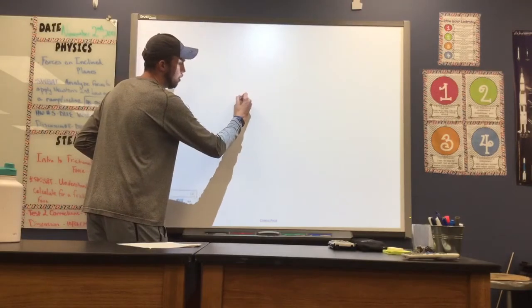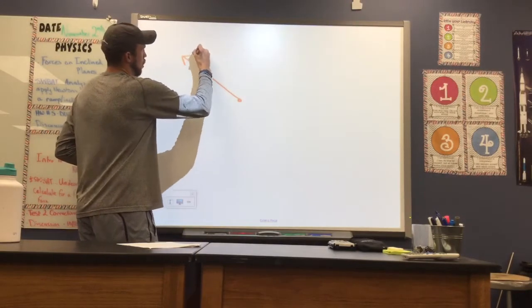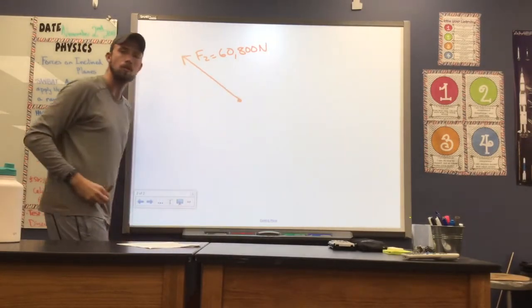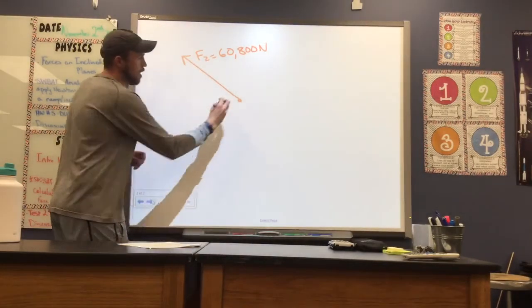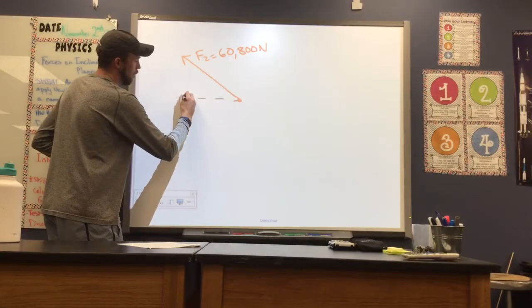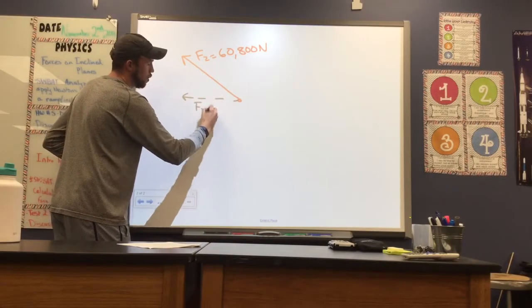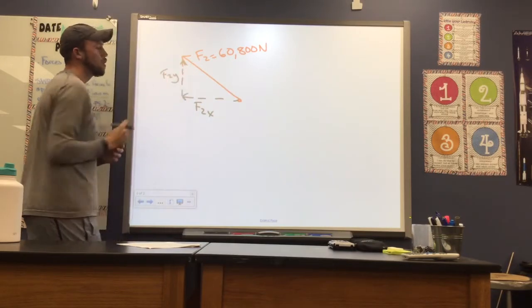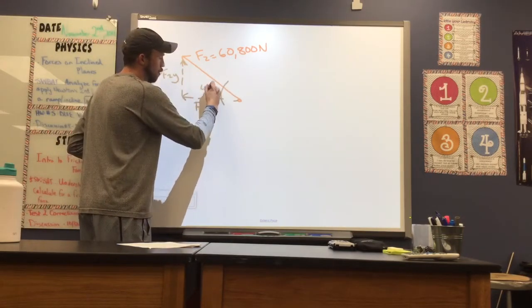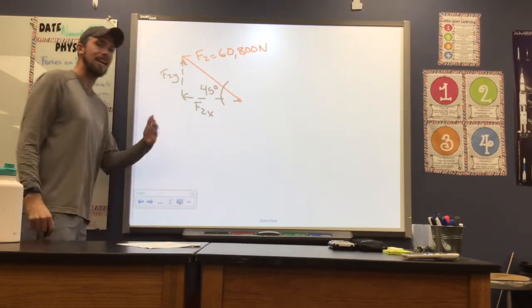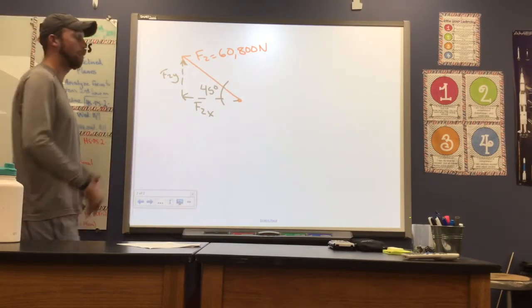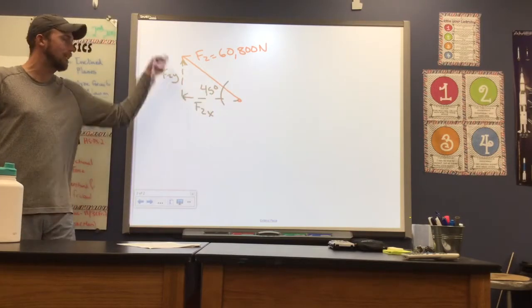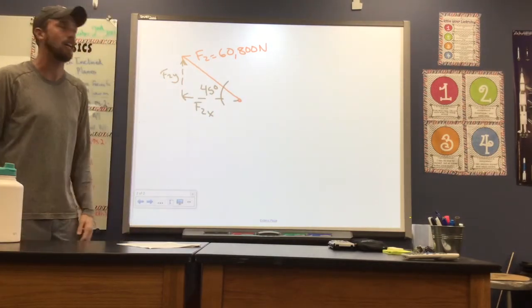Here we go. We've got F2, which has a magnitude of 60,800 newtons. And what we want to do is break that force into two components, F2 in the X and F2 in the Y. Now we know from our problem statement that that force is acting on a 45 degree angle. And fortunately for us, what that means is that those two components, F2 in the X and F2 in the Y are going to be the same magnitude.